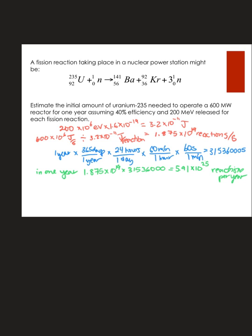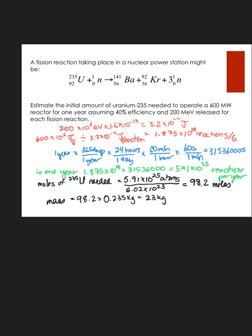Let's change that number of reactions — instead of saying how many atoms I have, let's turn it into number of moles. So if I take that many reactions per year, realizing that each reaction needs one atom of uranium-235, and divide it by Avogadro's number, that gives me 98.2 moles of uranium-235 needed. So what's the mass of that? If I multiply it by its atomic mass — which would be in grams — and convert it to kilograms, I actually need just 23 kilograms of uranium-235.